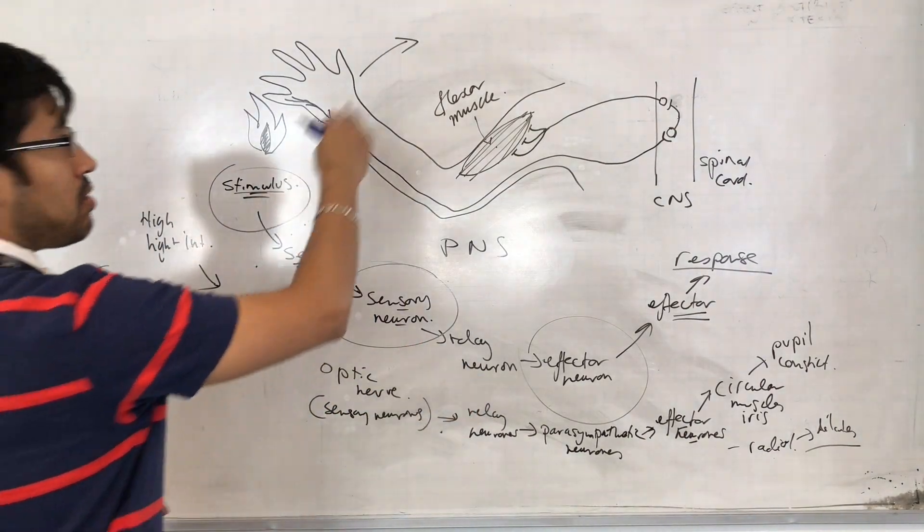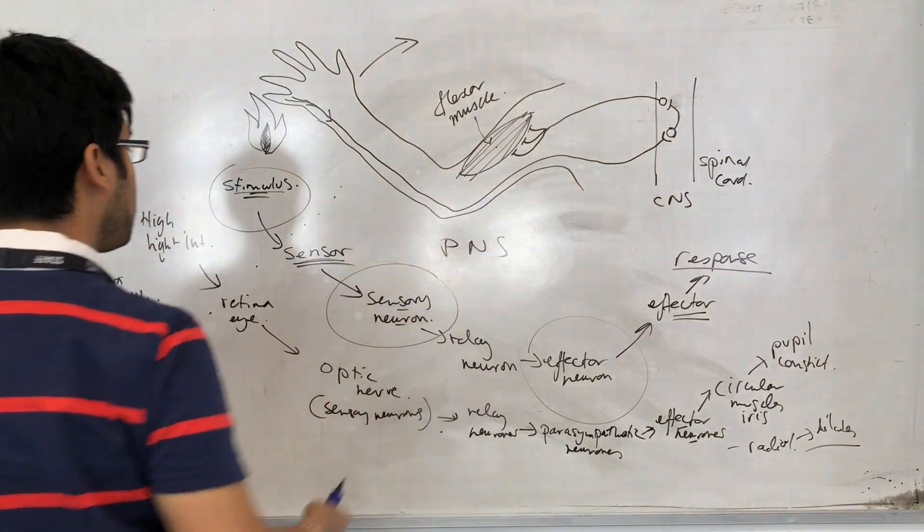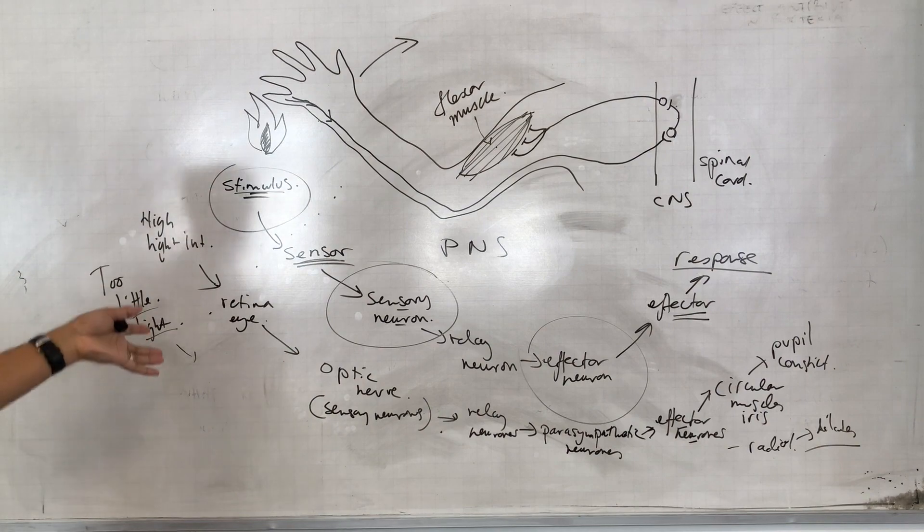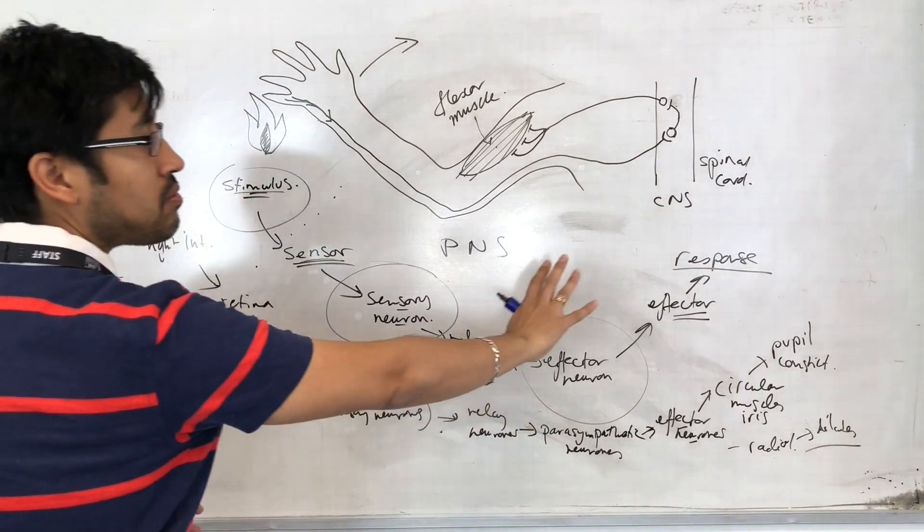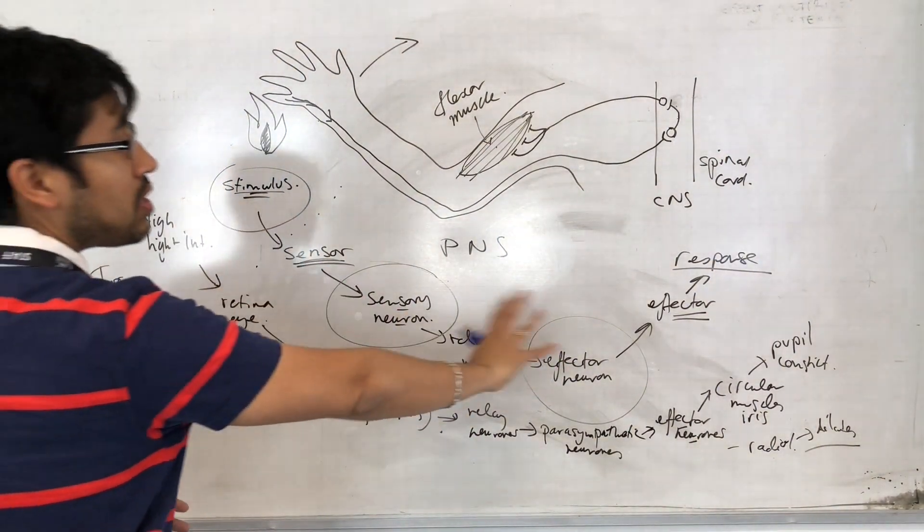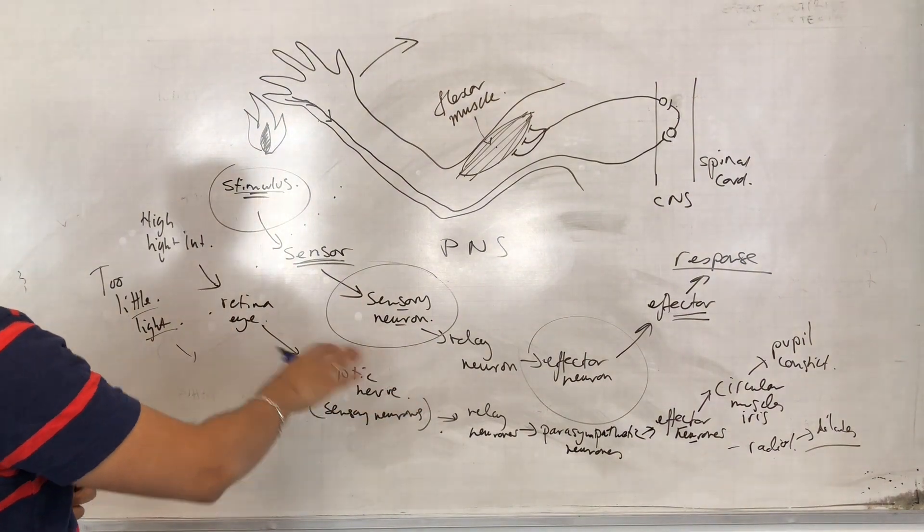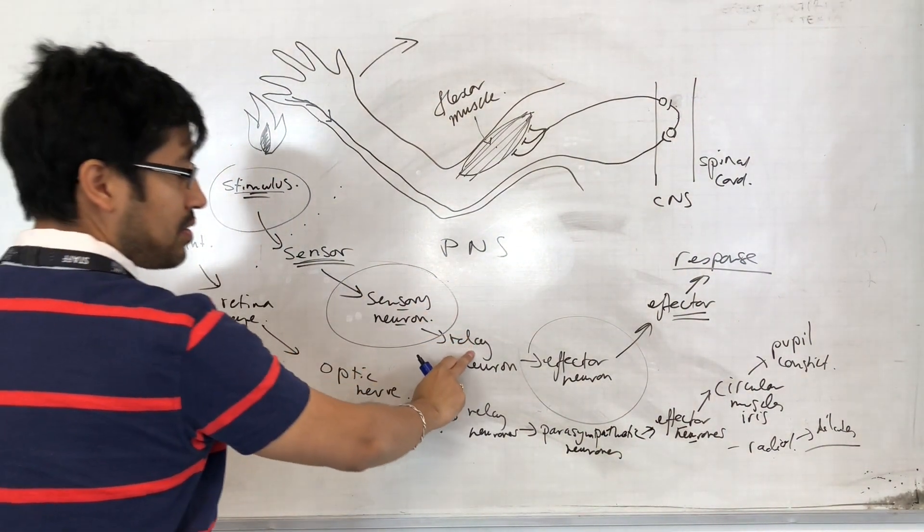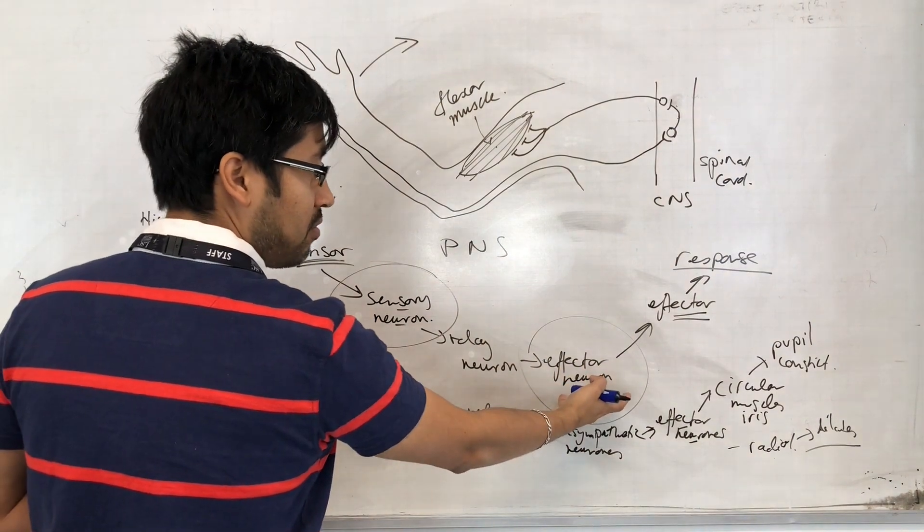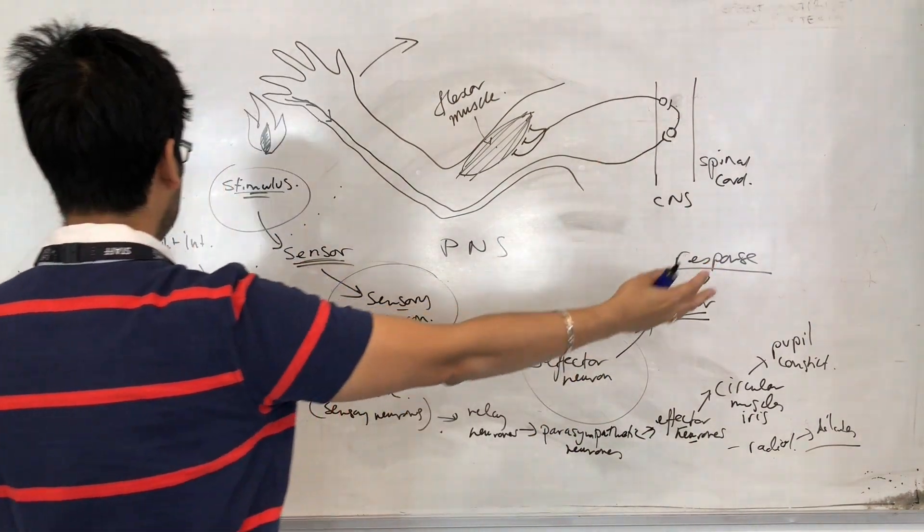So I hope we can see that from the most basic example to the pupil reflex, a similar kind of structure is there in the process. Sensor, sensory neuron, central nervous system, effector neuron, effector, and response.